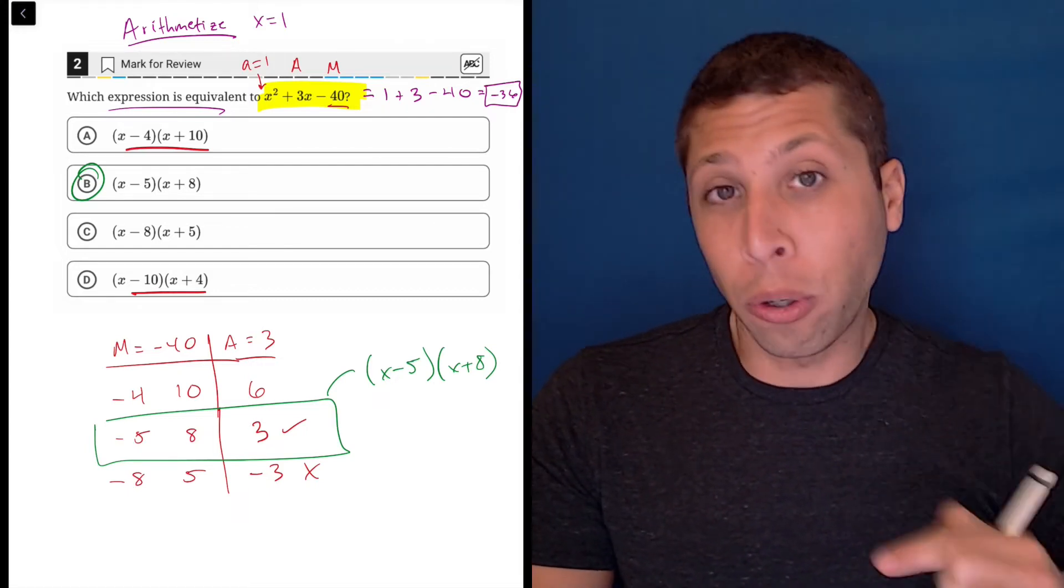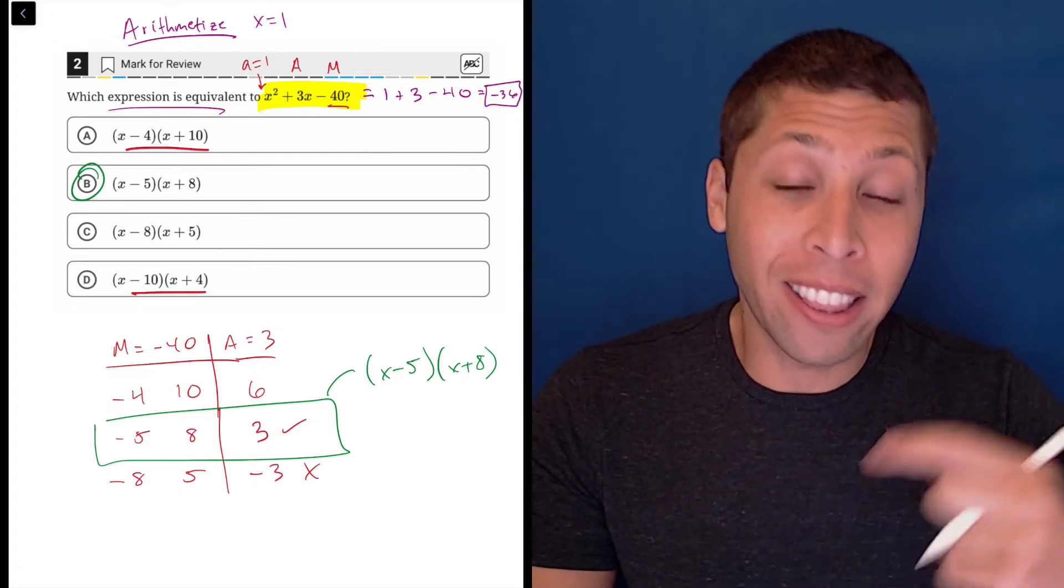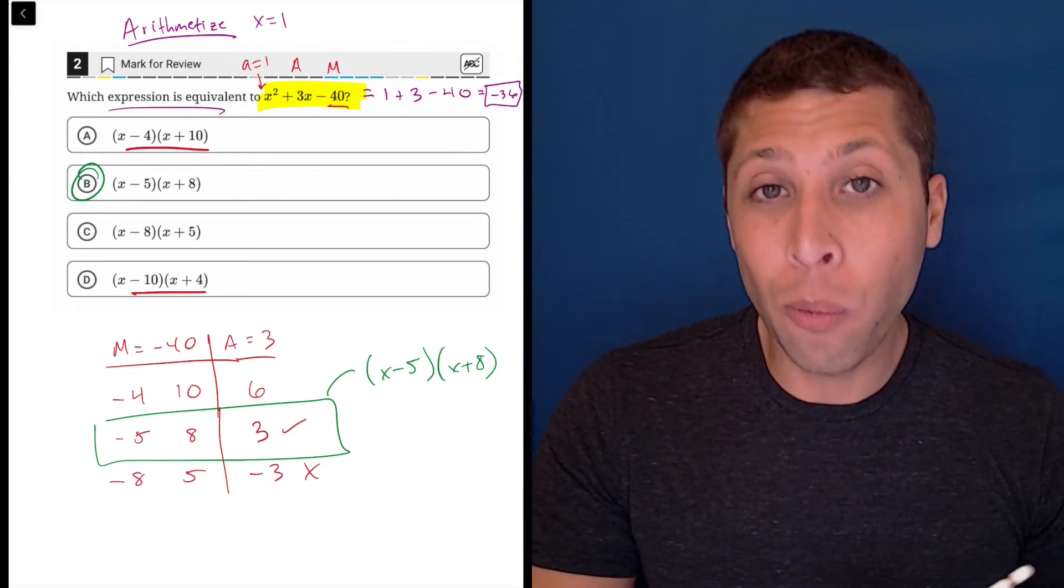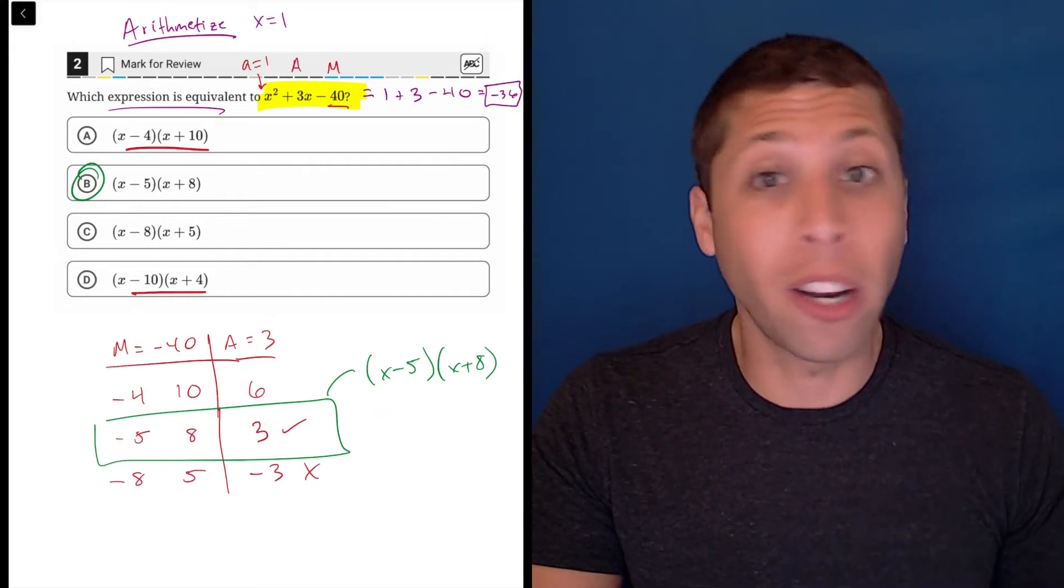So now I have a number instead of an expression. And since the answer choices are supposed to be equivalent expressions, then I should get the same number when I plug in one. So I'm making x one kind of in an arbitrary way.